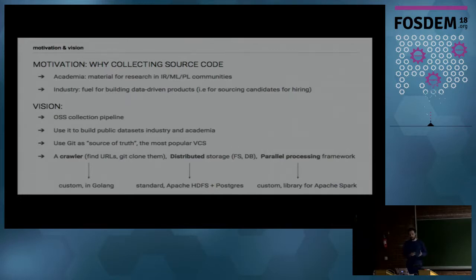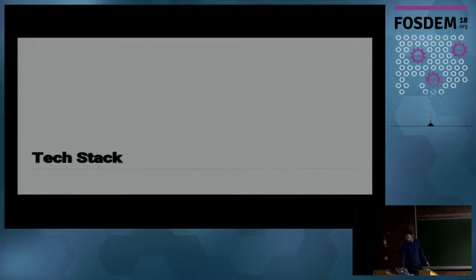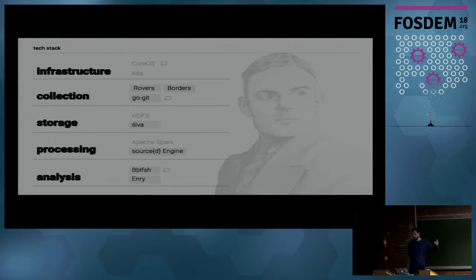First you need to get the data, and that's what I'm going to talk about. It's an open source pipeline you can use on premises to collect a lot of Git repositories, because it's the most popular version control system and the source of truth about source code. The collection pipeline is pretty standard: a crawler, distributed storage, and parallel processing. The takeaway of this talk is that if you're interested in large-scale data collection, there are awesome existing open source tools, and some new ones I wanted to share today.